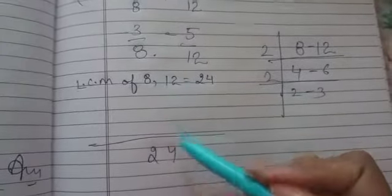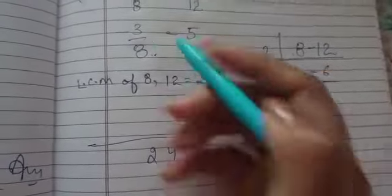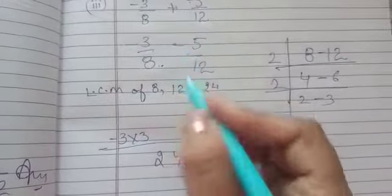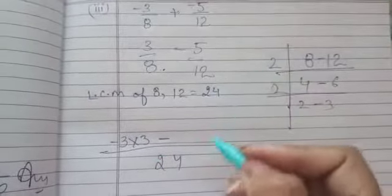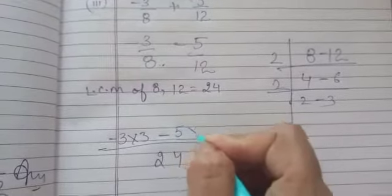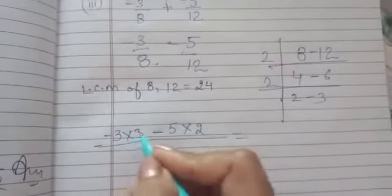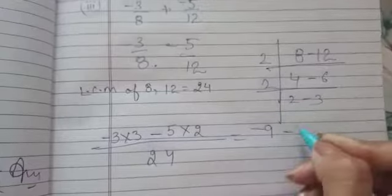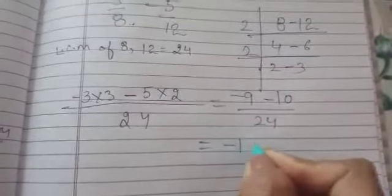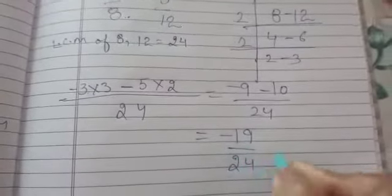Again write 24 here. Divide 24 with 8. 8 times 3 is 24. You will get 3. 3 will multiply with minus 3. Again, what sign is there? Minus. Put the negative sign. 12 will divide the 24, you will get 2. 2 will multiply with 5. 3 times 3 is 9. 5 times 2 is 10. Both the terms are from the same sign. They will add up. It becomes minus 19 over 24.